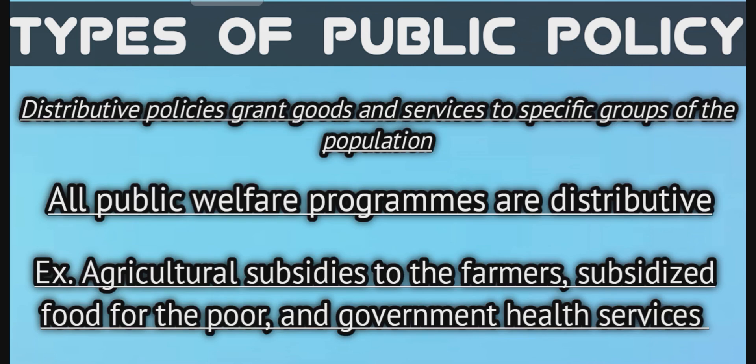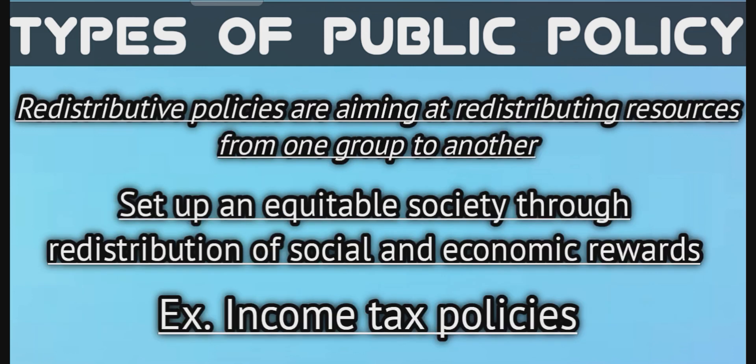The second type is distributive policy. Distributive policies grant goods and services to specific groups of the population. All public welfare programs are distributive. Agricultural subsidies to farmers, subsidized food for the poor, and government health services are examples of such policies.